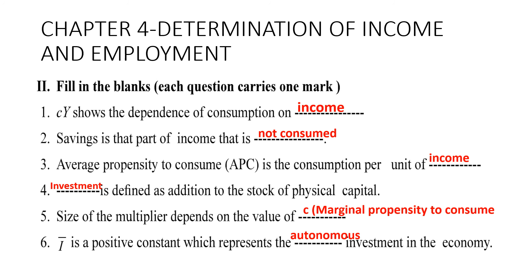Chapter four: determination of income and employment. First: C(Y) shows the dependence of consumption on income — how an increase or decrease in income affects your consumption.